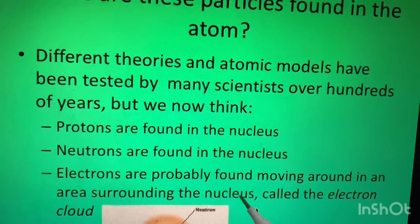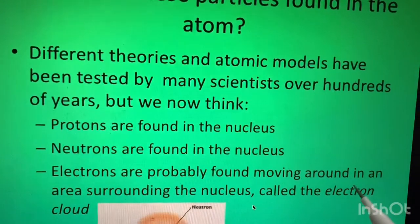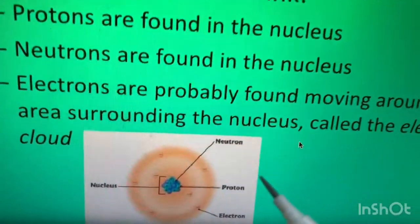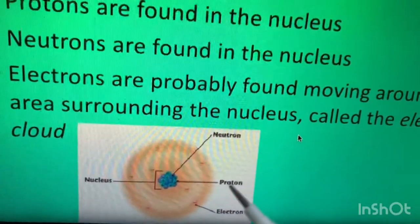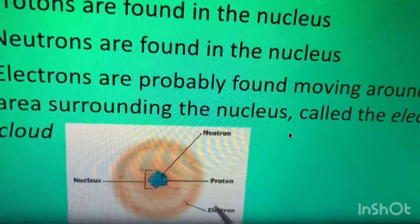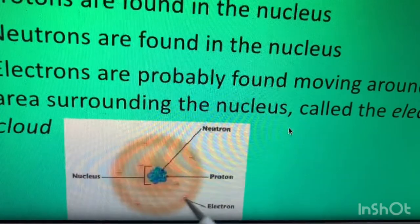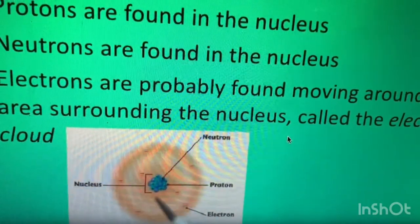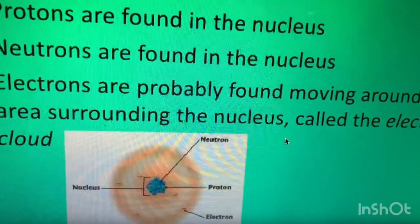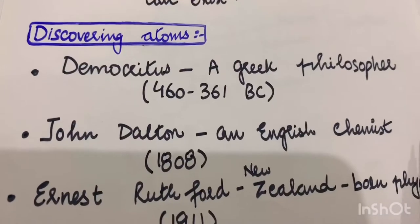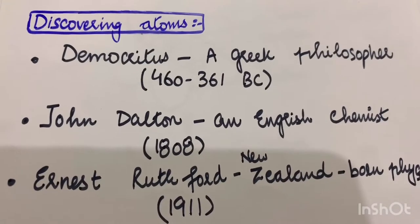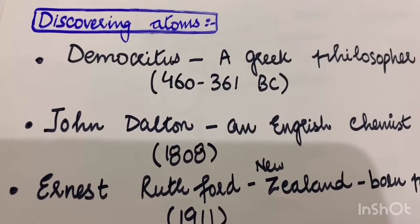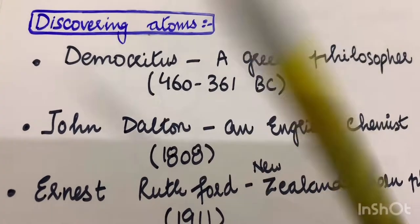The area around the nucleus where electrons move is called the electron cloud. Looking at the diagram, you can see the electrons in the electron cloud and the protons and neutrons inside the nucleus.